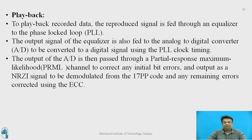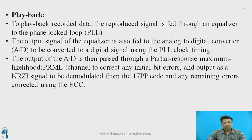Playback: To play back the recorded data, the reproducing signal is fed through the equalizer to the phase-locked loop. The output of the equalizer is fed to the analog-to-digital converter, which converts the signal into digital form using PLL clock timing. The output of the ADC is then passed through the Partial Response Maximum Likelihood (PRML) channel to correct any initial bit errors. The output as an NRZI signal is demodulated from 17PP code, and any remaining processing errors are corrected using the EECC signal.